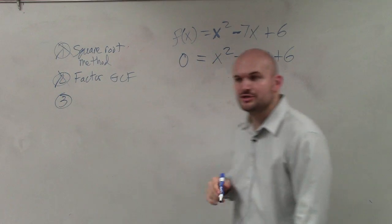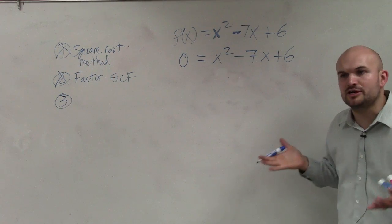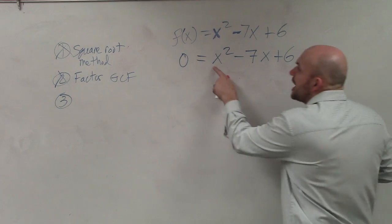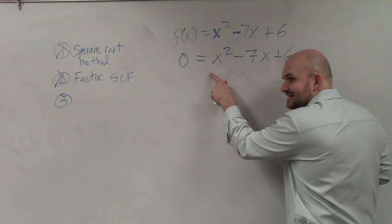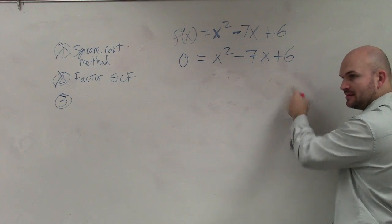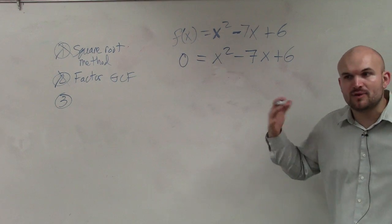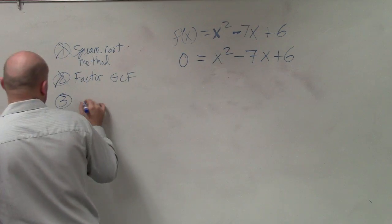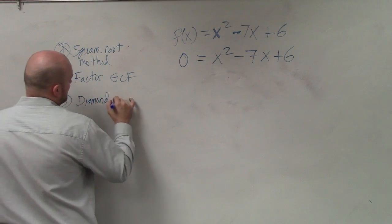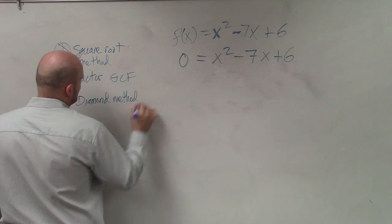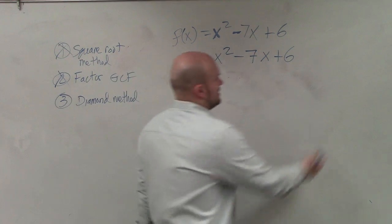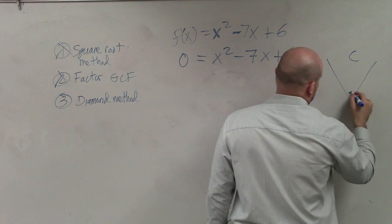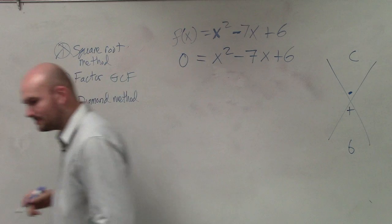So the last thing is we need to be able to factor out a trinomial. And again, when I'm saying factoring, what I'm saying is I want to rewrite this as a multiplication problem, right? That's what factoring is saying, rewrite it as multiplication. So to do that, we're just going to call this the diamond method.